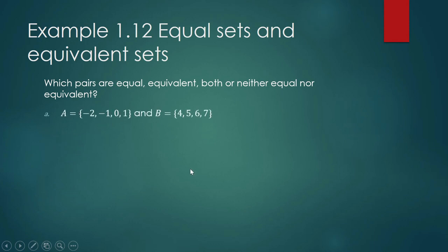Suppose these are our sets. A equals {-2, -1, 0, 1} and B equals {4, 5, 6, 7}. Obviously, they are not equal because they have different elements. But they have the same number of elements. The cardinal number of A is 4. The cardinal number of B is 4. Therefore, A is equivalent to B.